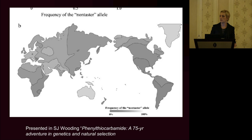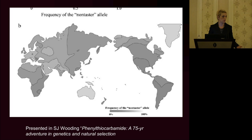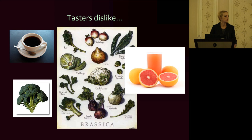One reason this genetic variant has been studied quite avidly is because of differences in the percentage of non-tasters across geographical regions. In certain places in sub-Saharan Africa, there are virtually no non-tasters. Compare that to the United States, where we have about 30% non-tasters, and some places in India where we have about 40% non-tasters. This suggests a selective pressure that really favors the heterozygote condition — otherwise this allele would have been selected against long ago and wouldn't exist today.